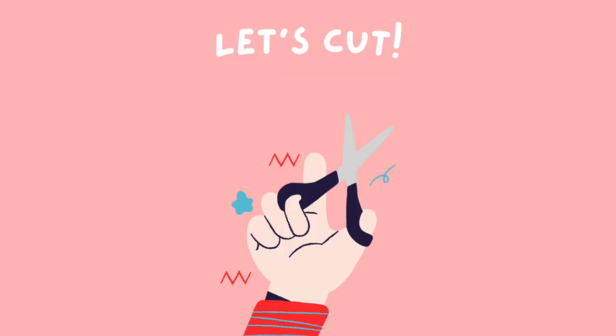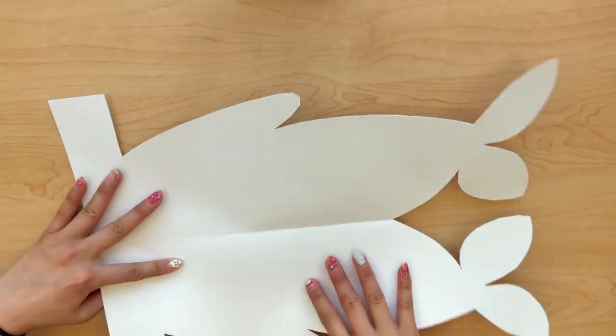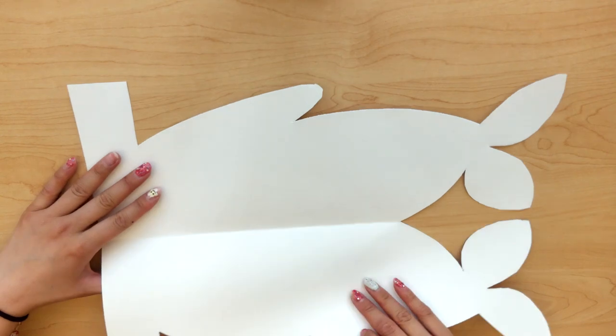Let's cut. When you're cutting your fish out, please make sure that you cut both pieces at the same time. This is going to make sure that our fish is symmetrical. And once you open it up, it should look something like this.